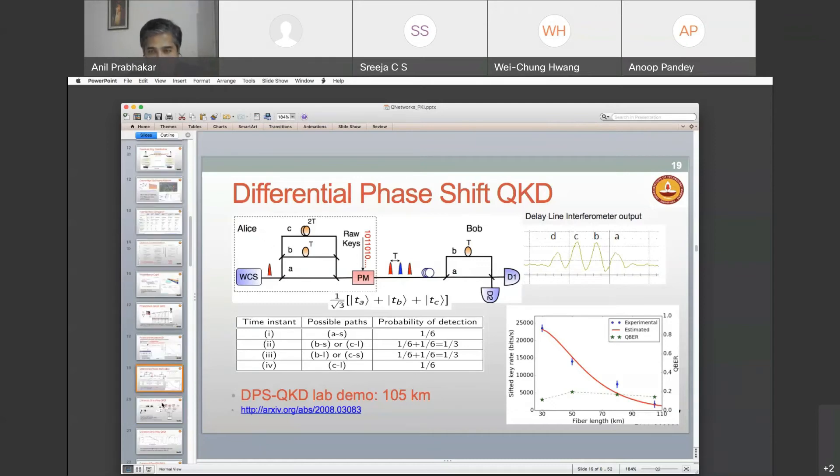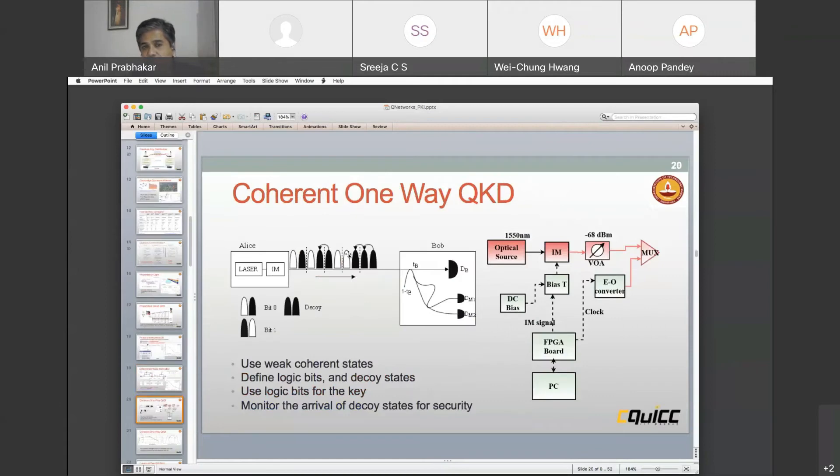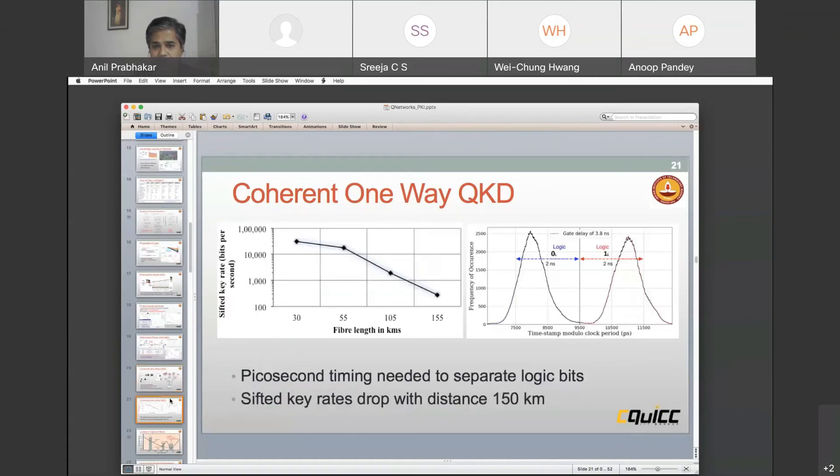There are other protocols. There's one called a coherent one-way protocol where instead of sending information in the phase, you send the information in whether the photon exists or it is a vacuum state. So you're actually trying to use the energy of a photon coupled with the vacuum state energies to send information. This is an easier protocol, but it is supposedly not as secure. There's still work going on it, but we have managed to do demonstrations up to 150 kilometers.